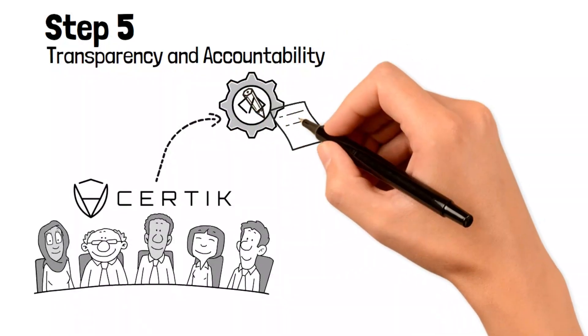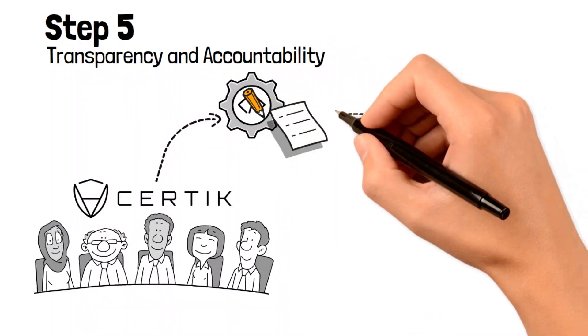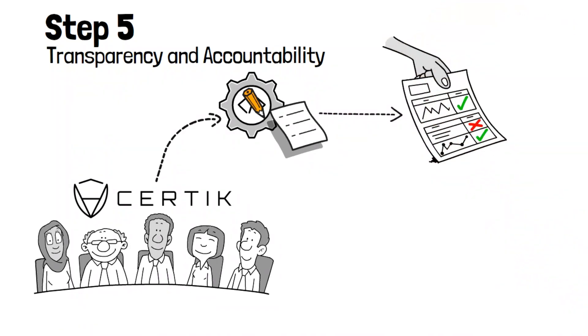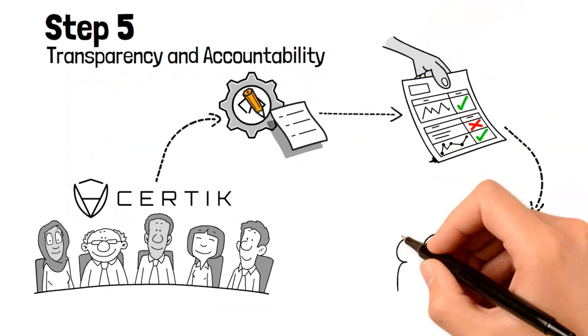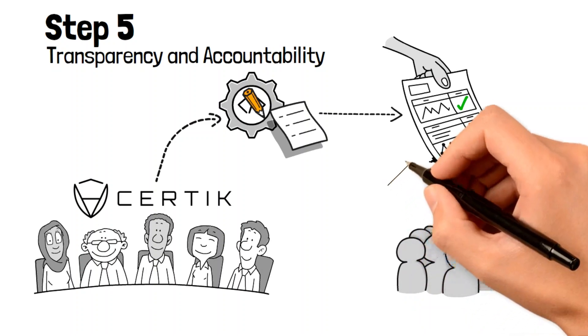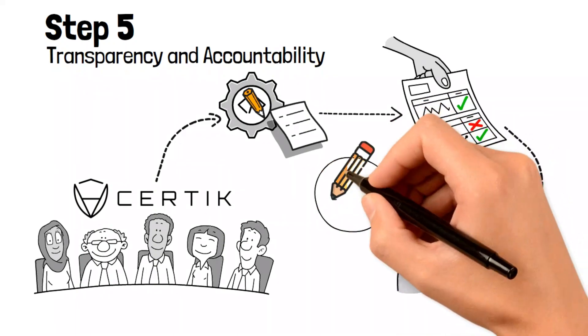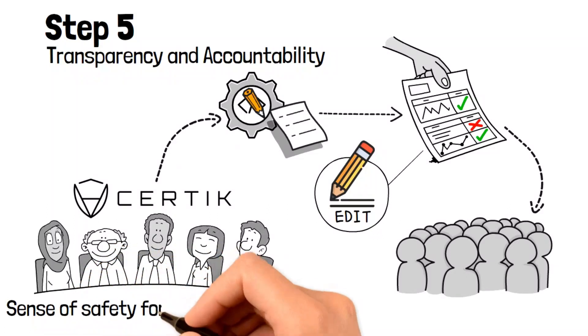To ensure the security of your blockchain and cryptocurrency, you can have auditing firms like Certik review the code for any potential vulnerabilities. They thoroughly examine the code, looking for weaknesses and potential risks. Once the audit is complete, you can share the findings publicly and take appropriate actions to address any issues.